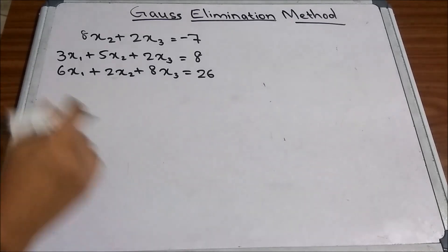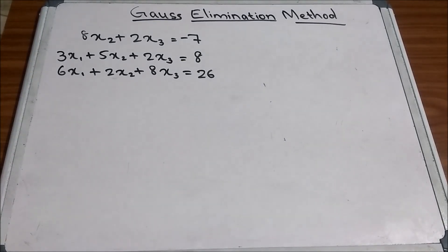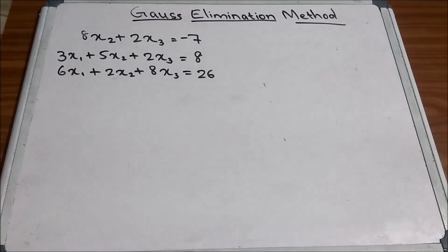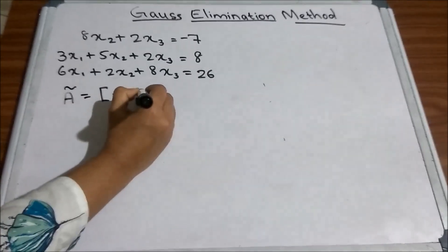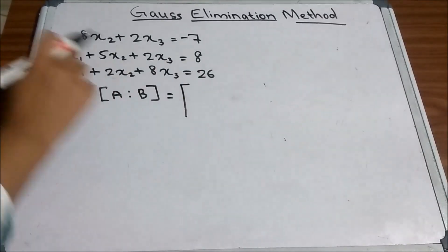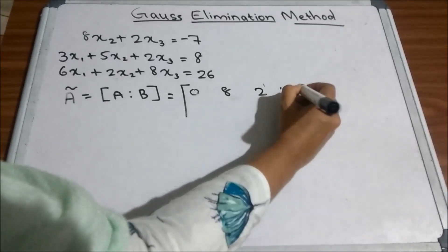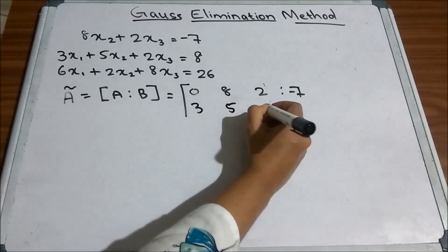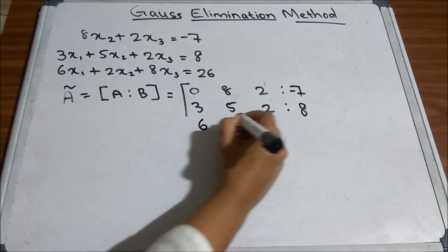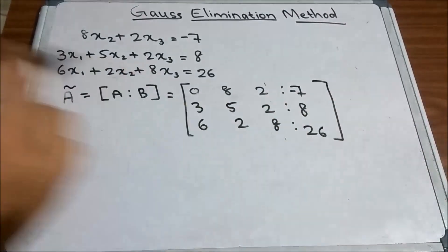I will show you with an example. Consider the system: 0·x1 + 8·x2 + 2·x3 = −7, 3·x1 + 5·x2 + 2·x3 = 8, and 6·x1 + 2·x2 + 8·x3 = 26. First we have to write the augmented matrix Ã, which is the coefficient matrix A together with b. The first row is [0, 8, 2 | −7], the second row is [3, 5, 2 | 8], and the third row is [6, 2, 8 | 26].